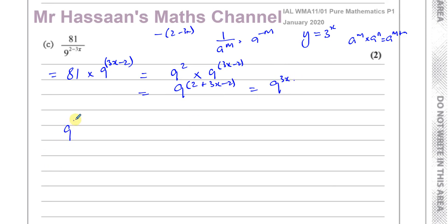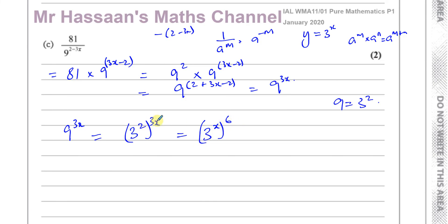We're not quite there yet — we need 3 to the power of x. Since 9 equals 3 squared, I replace 9 with 3 squared, giving 3 squared to the power of 3x. Multiplying the powers, I can write this as 3 to the power of x, raised to the power of 6, giving 3 to the power of 6x. Now replacing 3 to the power of x with y gives y to the power of 6. So 81 over 9 to the power of 2 minus 3x equals y to the power of 6.